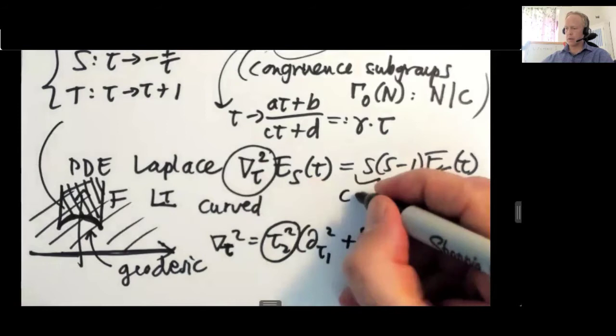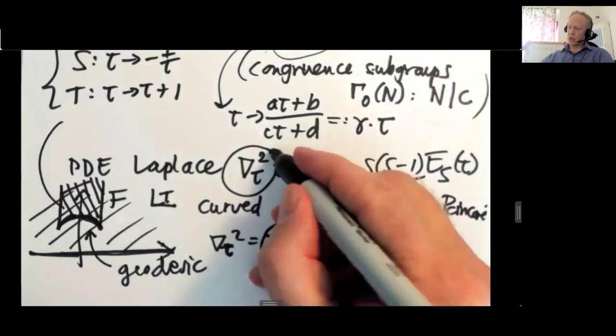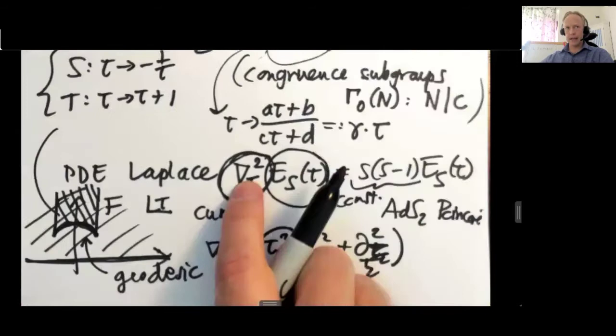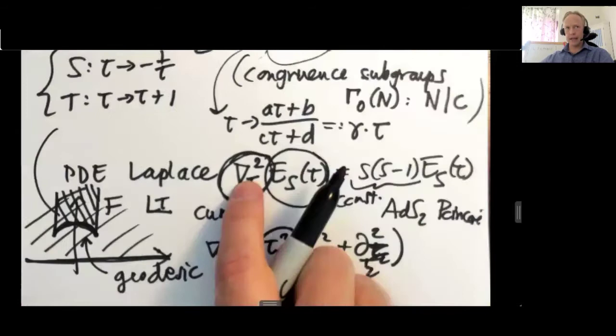So this is a constant. And this is invariant. This is an invariant differential operator. The Laplace operator is invariant when it's applied to scalars. So here we really have an object that's invariant under the modular group, and it satisfies an invariant differential equation.